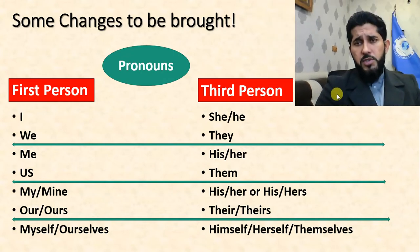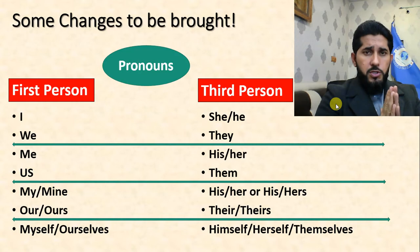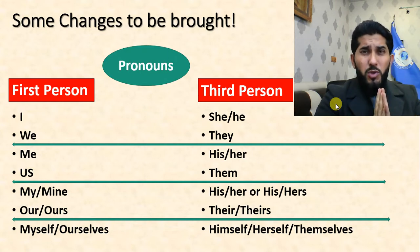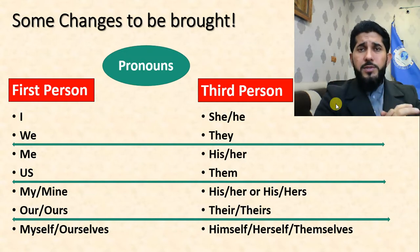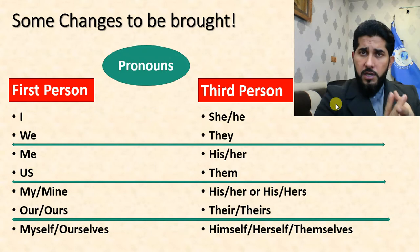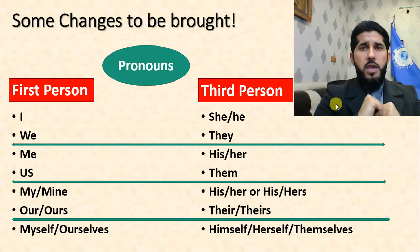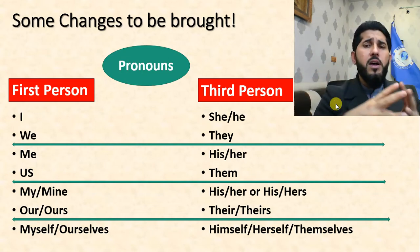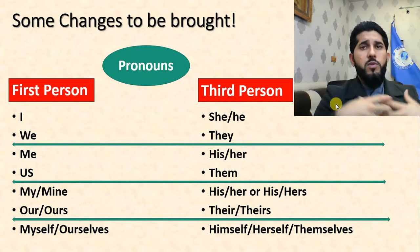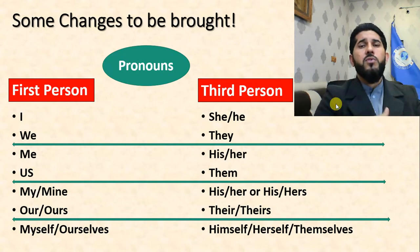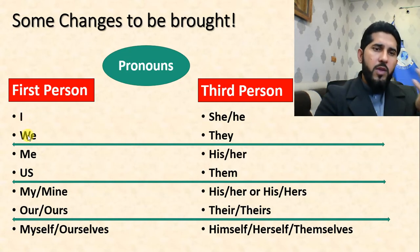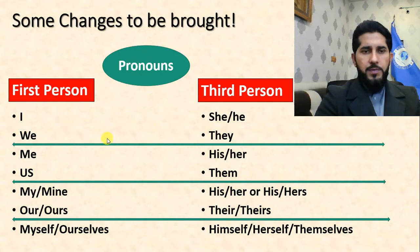Now let's see how we change pronouns in indirect speech. Personal pronouns are divided into three categories: first person — I, we; second person — you, you; and third person — he, she, it, they. I've included all forms: subjective, objective, possessive adjective, possessive pronoun, and reflexive pronoun forms.